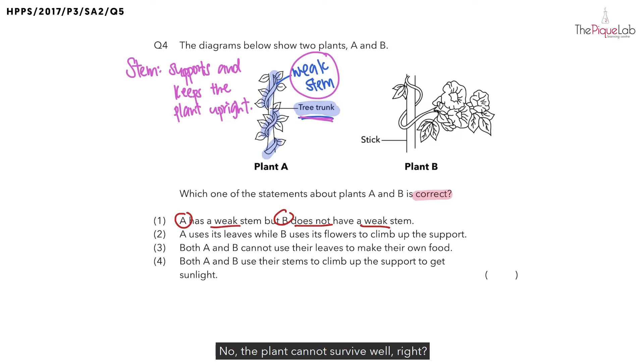And do you think the plant will be able to survive well in this case? No, the plant cannot survive well. So the reason why a plant with weak stem would want to climb around a tree trunk or even on another object is because it wants to be able to trap maximum amount of sunlight so that it can use the sunlight to make food during what process? During the process of photosynthesis.